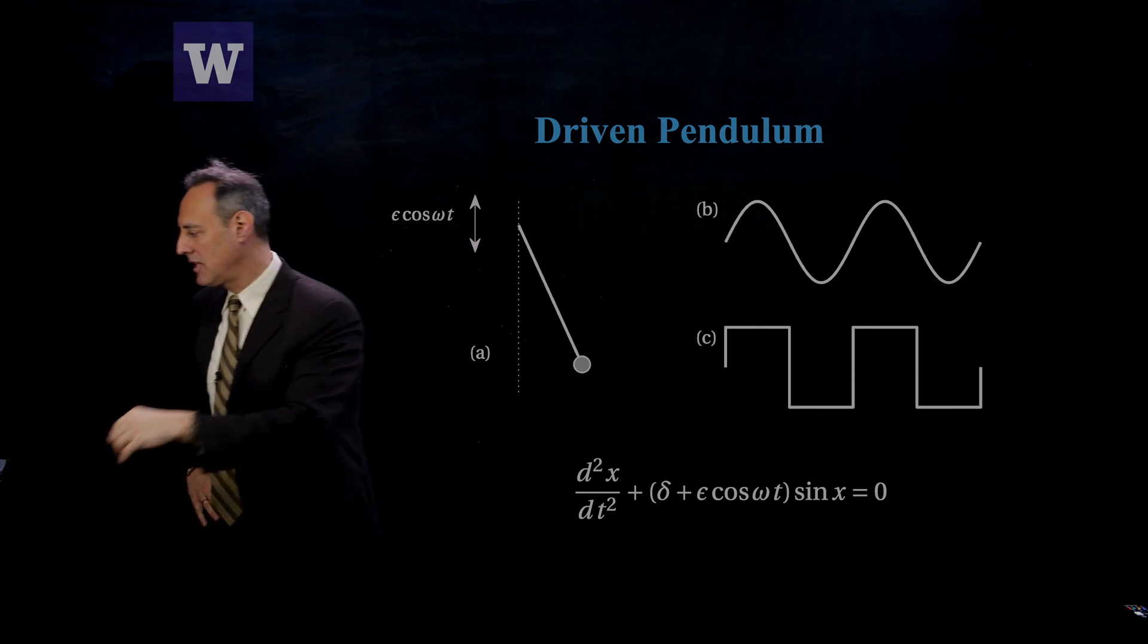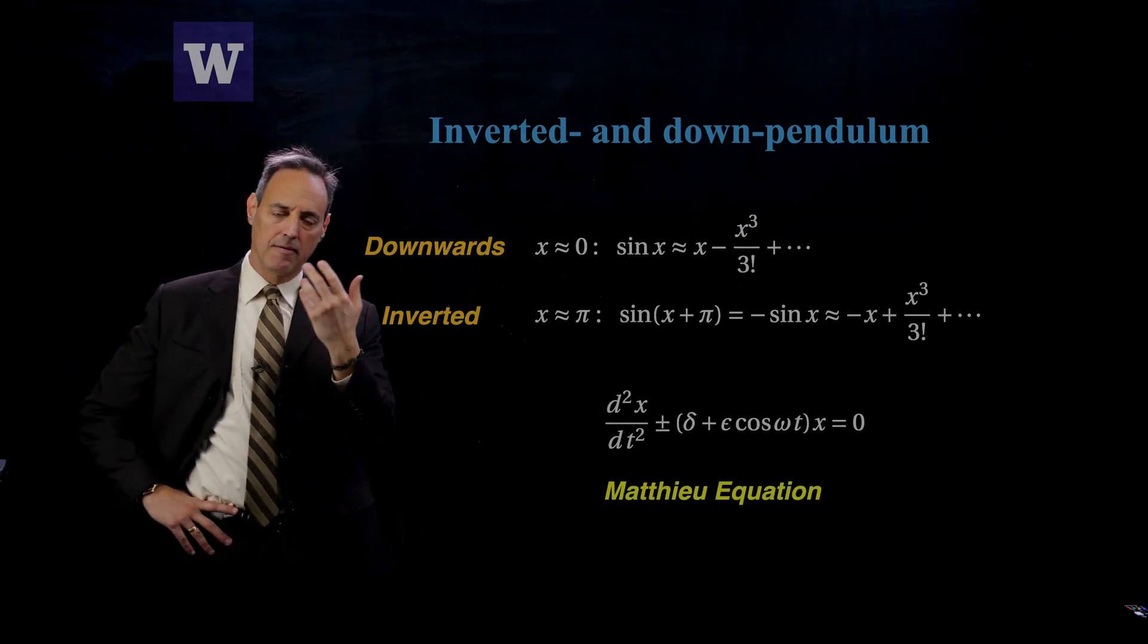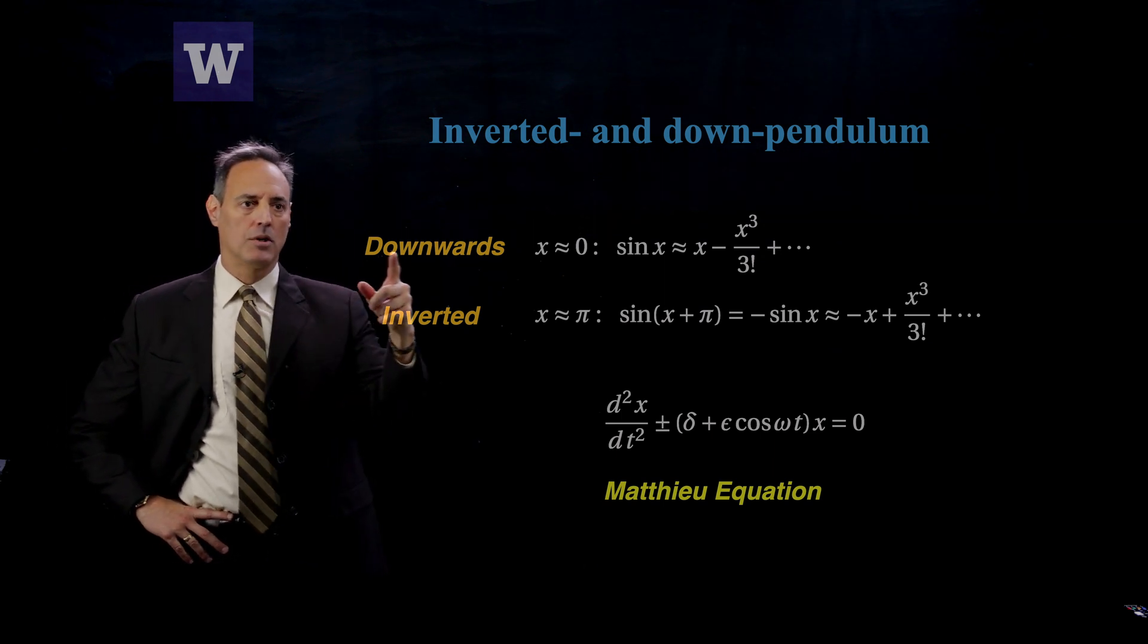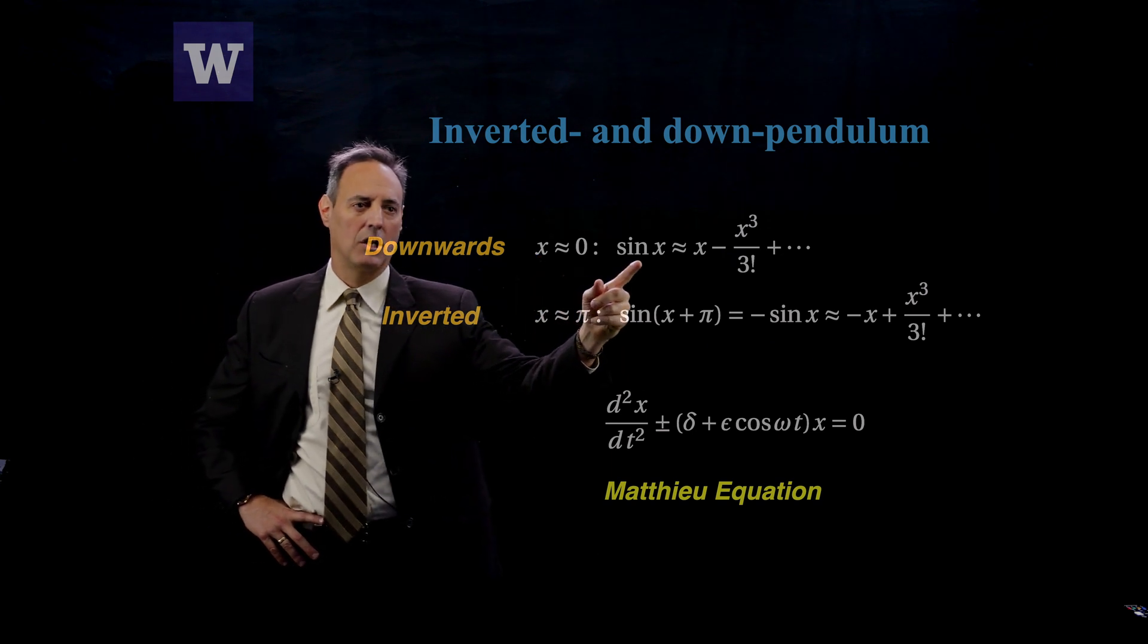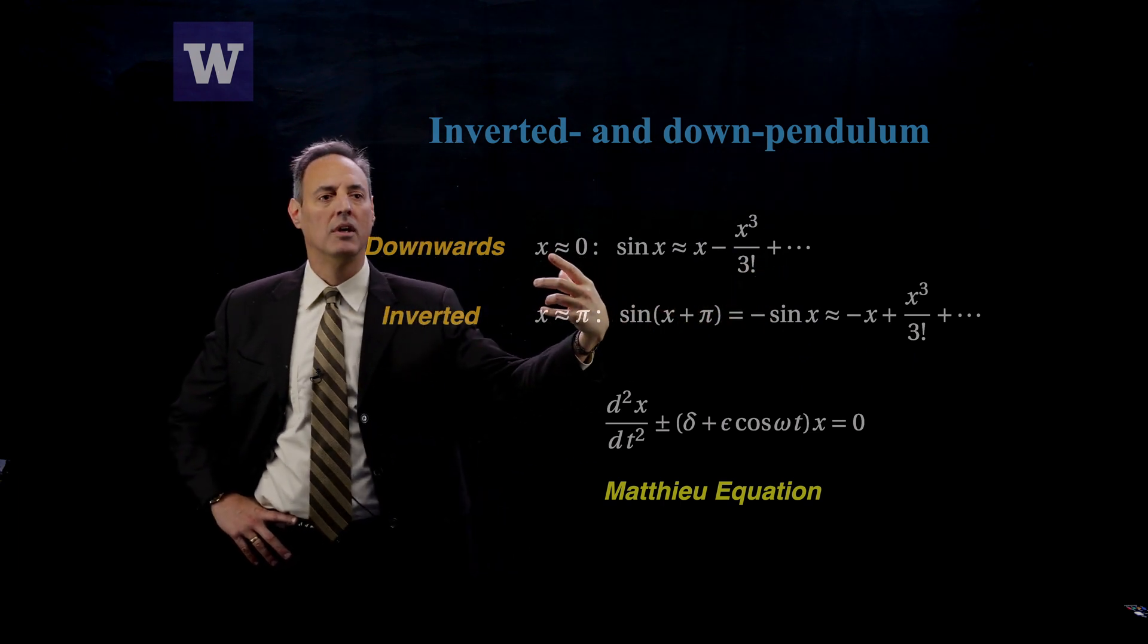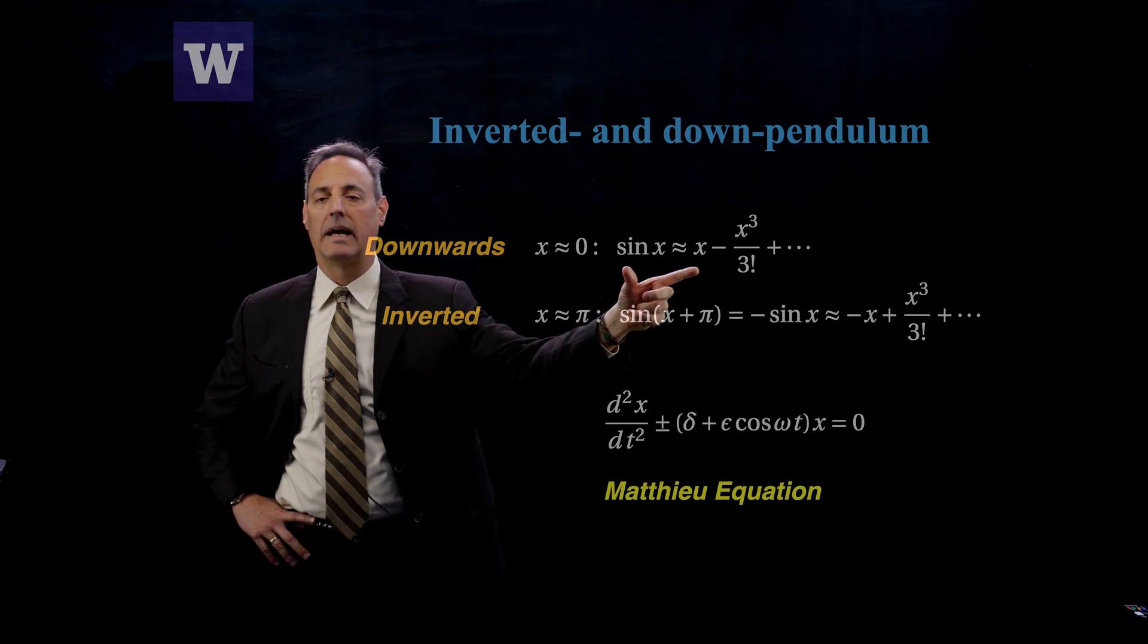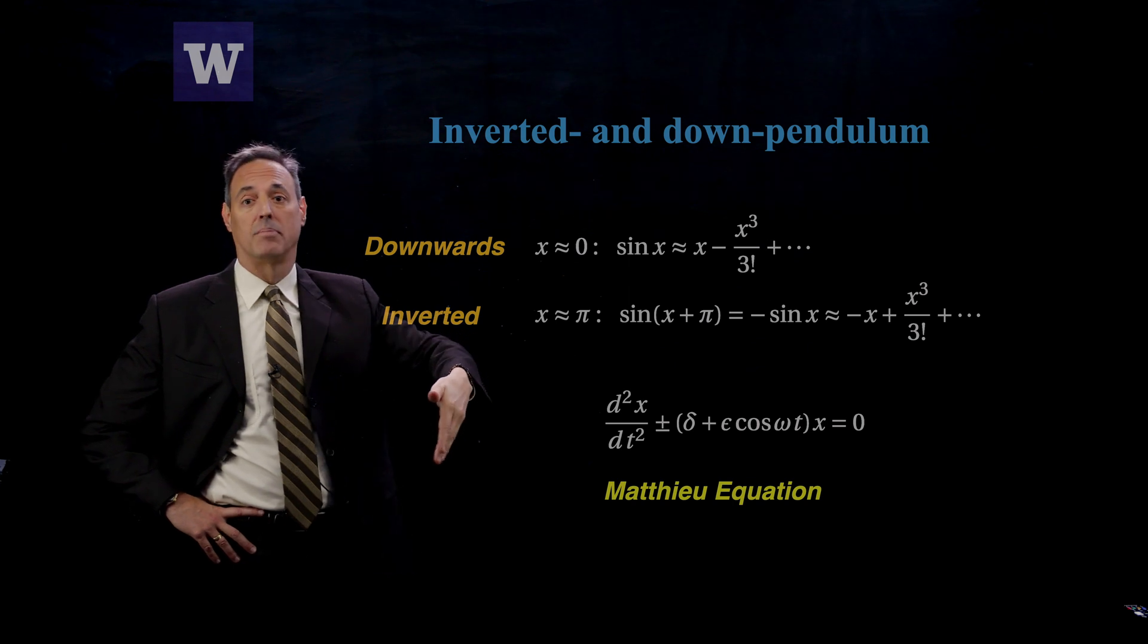So let's look at this. I'm going to look at the pendulum near the inverted and the downward position. When you're downwards, you're near x equals zero, so sine x can be approximated by x minus x cubed over three factorial. Normally what we do is we do small amplitude. In the small amplitude limit, we replace sine x by x. So that would allow us to address the stability of the pendulum in the down position.